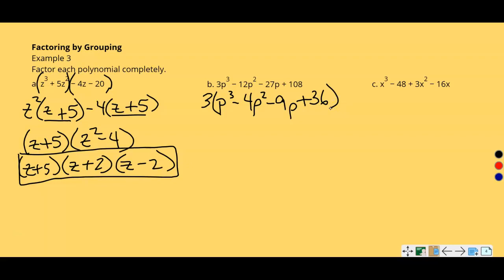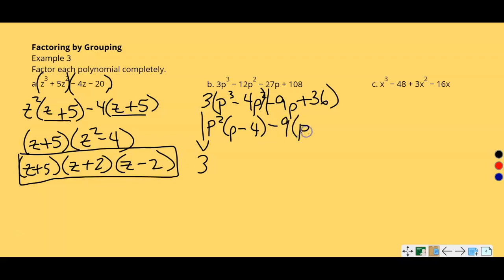Now we factor by grouping the expression inside. We bring down the 3 as part of the answer. From the first binomial, factor out p²: that gives p²(p − 4). From the second binomial, factor out negative 9: negative 9 times p, and negative 9 times negative 4 is 36. So our next greatest common factor is (p − 4).